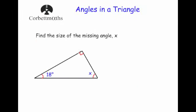Next question. We have got 18 degrees, X, and the symbol for a right angle. Whenever you see this little box symbol, it shows a 90 degree angle. I'd recommend that if you ever see this symbol in a triangle, write 90 degrees straight away — it shows you know that's a 90 degree angle and will help you get the answer easily.